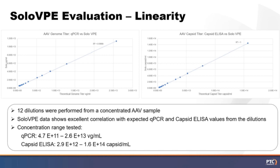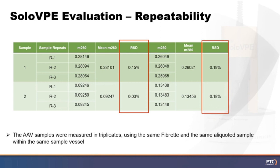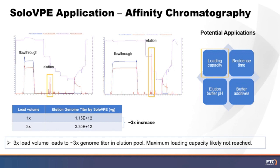Next, we examined repeatability. Two AAV samples were measured in triplicates using the same fibrite and the same aliquot within the same sample vessel. We looked at slope 260 and slope 280 values, and the percent RSD was less than 0.2% for both measurements — which is excellent. For intermediate precision, an AAV sample was measured by two scientists on different days using different fibrites, sample vessels, and aliquots. Slope 260 and slope 280 again showed very small RSD values of less than 1%. After establishing accuracy, linearity, repeatability, and intermediate precision, we were comfortable with the method and started looking at potential applications in AAV downstream process development.